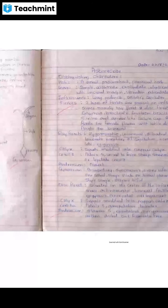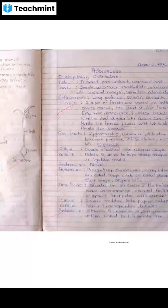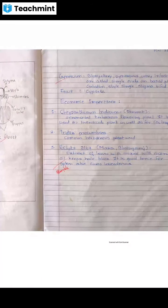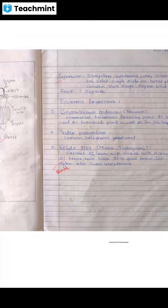Fruit is a cypsela — a dry, single-seeded fruit that does not split open during seed dispersal, and is formed from a double ovary in which only one ovule develops into a seed. Plant of economic importance: Chrysanthemum indica.